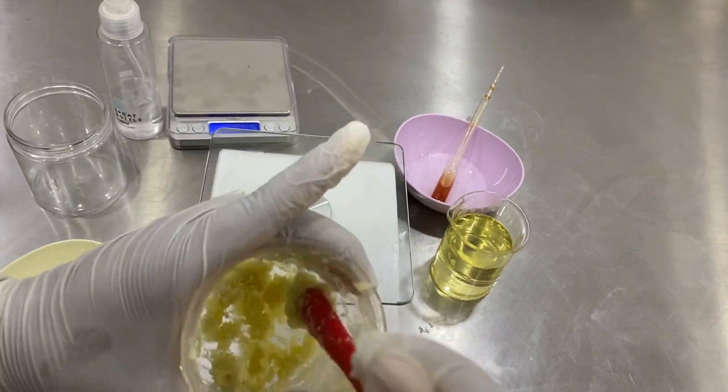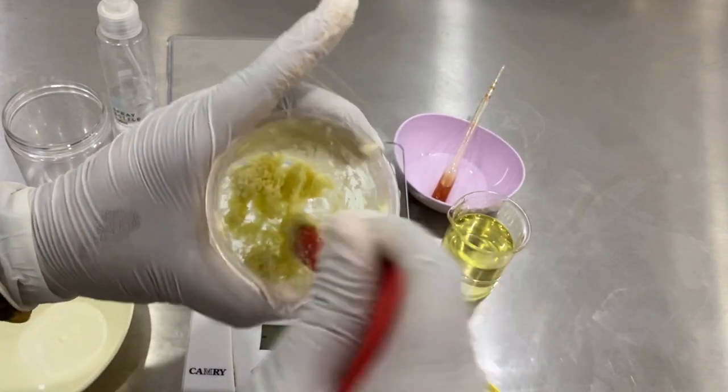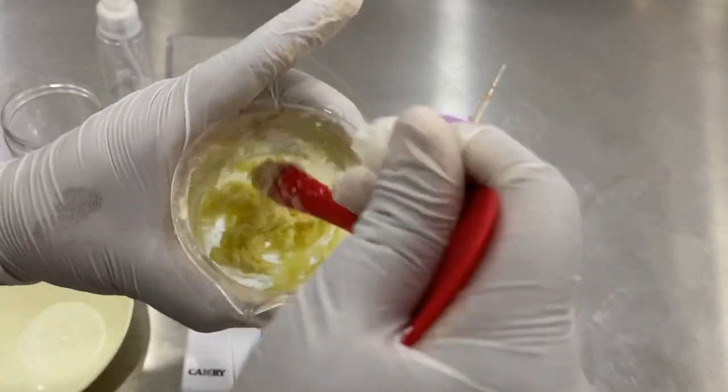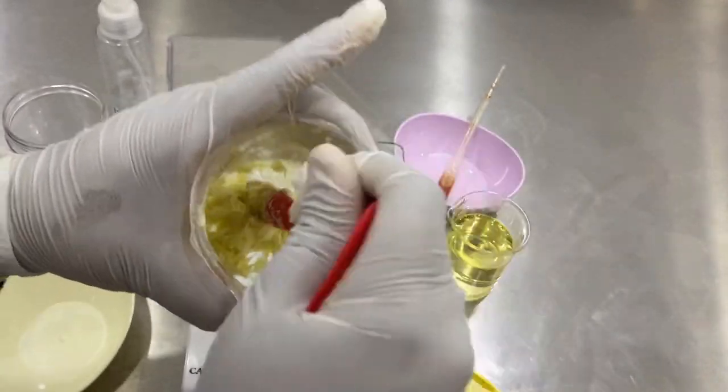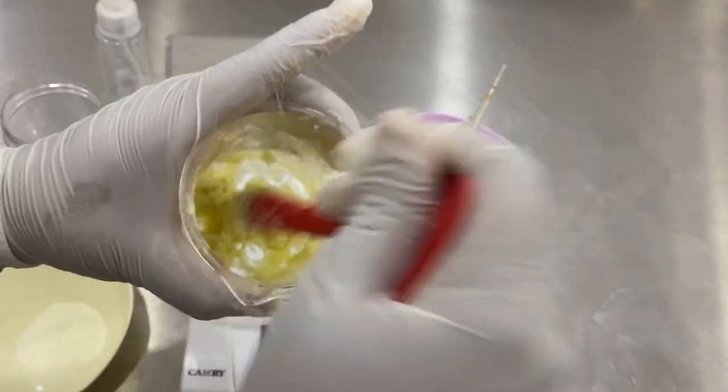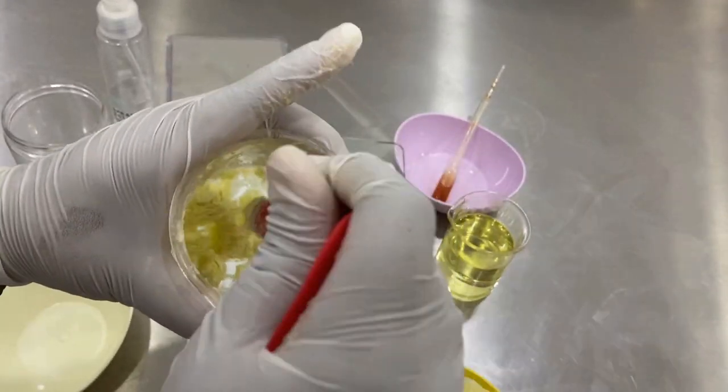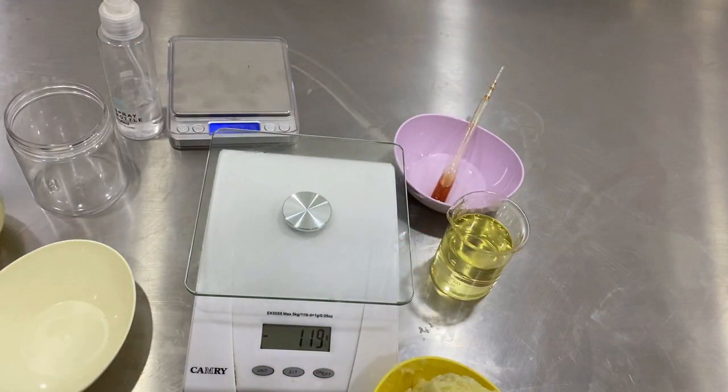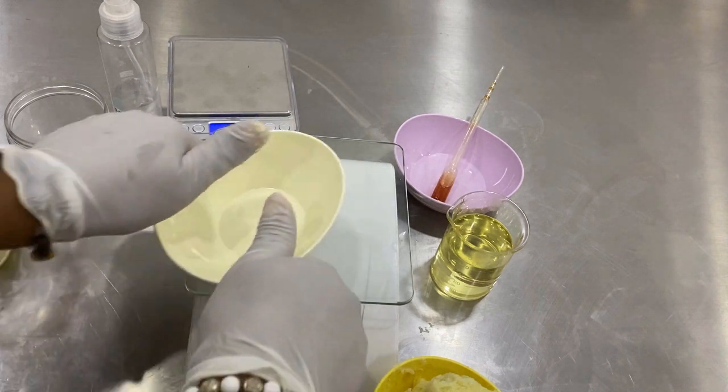So I'll keep breaking it down this way until I get like a smooth and a bit creamy kind of consistency. So once I do that, I'll set it aside and measure my sweet almond oil.